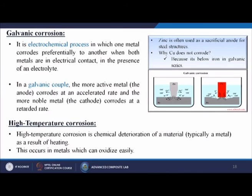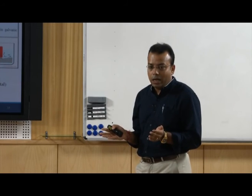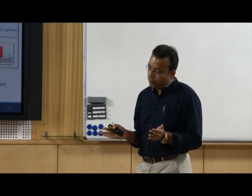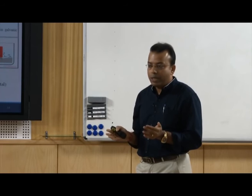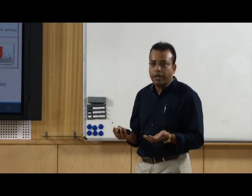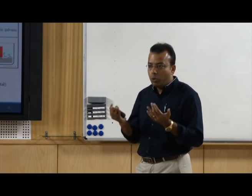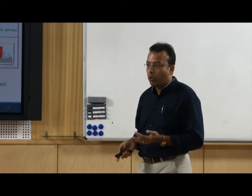In the copper-and-iron case, iron gets eroded faster than copper because iron is above copper in the galvanic series. Which material is higher in the galvanic series will erode more than the one that is lower. From this we can easily detect which material will erode faster and which will erode slower.